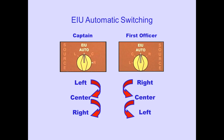The EIU selector also has an auto position. The auto position allows automatic selection of an operable EIU if an EIU fails. The auto position of the Captain's selector selects the left EIU. If the left EIU fails, the center EIU is automatically selected. If the left and center EIUs fail, the right EIU is selected. The auto position of the First Officer's selector selects the right EIU. If the right EIU fails, the center EIU is automatically selected. If the right and center EIUs fail, the left EIU is selected.